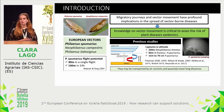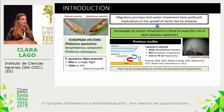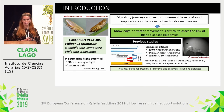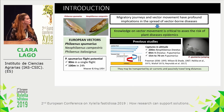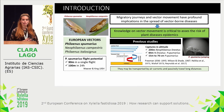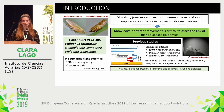Philaenus spumarius, but also Neophilaenus campestris and Philaenus italosignus, have been identified as vectors of Xylella fastidiosa in Europe. Vector movement has profound implications for the spread of vector-borne diseases, so knowledge on this matter is critical to assess the risk of plant disease epidemics. Adults of spittlebugs are able to intentionally displace by jumping, crawling, or flying. In 1954, Weaver and King described that adults of Philaenus spumarius were able to travel 30 meters in a single flight and 100 meters in 24 hours.